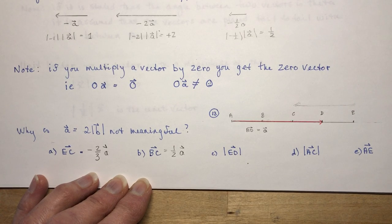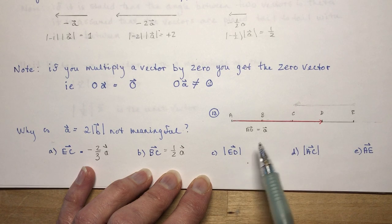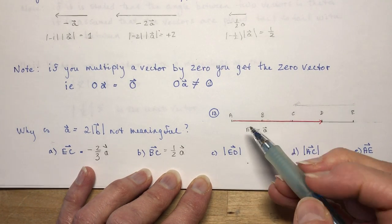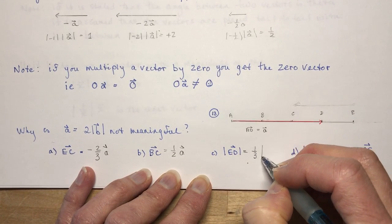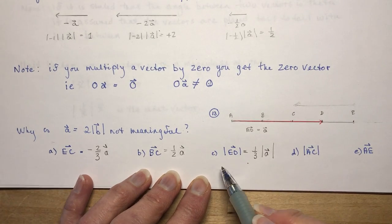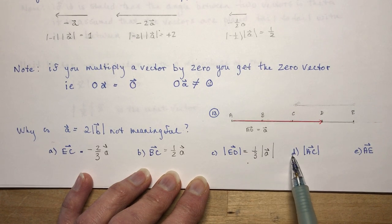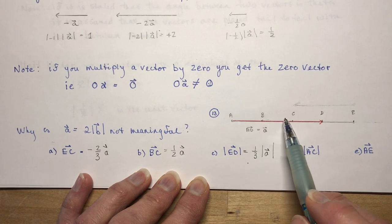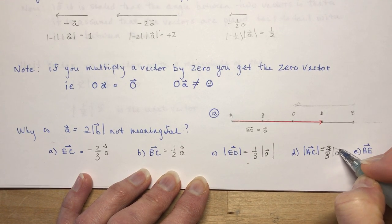I know it's confusing — it's like learning a new language. The magnitude of ED equals 1-third because it's only 1-third of A, so it's 1-third the magnitude of A. Notice this makes sense because I have magnitude on both sides. What is the magnitude of AC? AC would be 2-thirds — 2 of 3 — so that's 2-thirds the magnitude of A.